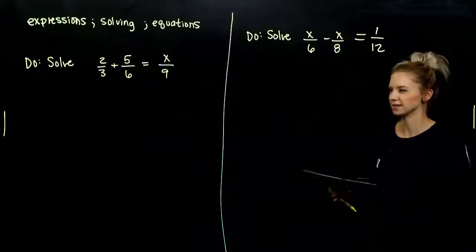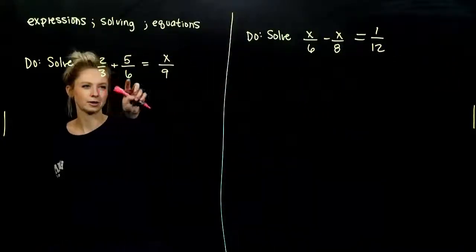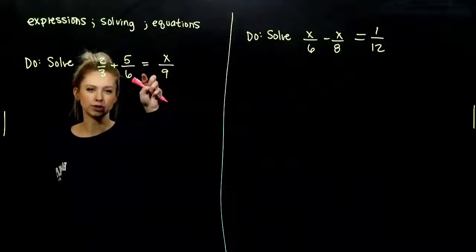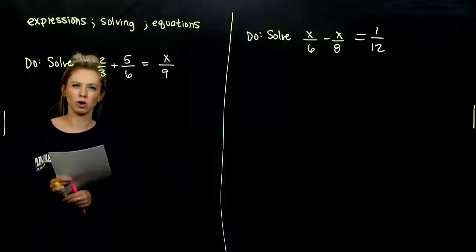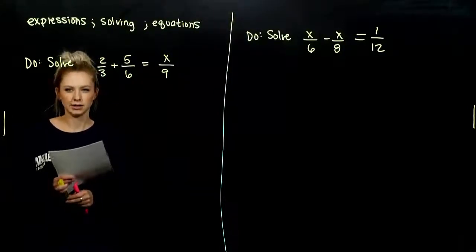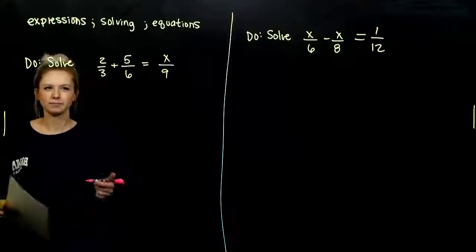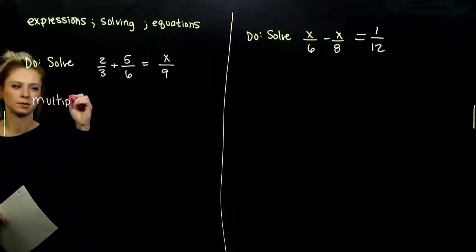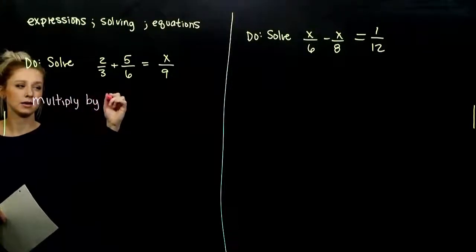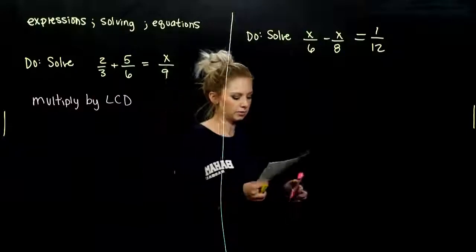So looking at that first example, I need to solve this rational equation. I have fractions everywhere. How do I get rid of all of those fractions? I'd like to deal with whole numbers if I can help it. And how do we do that? We multiply by the LCD.